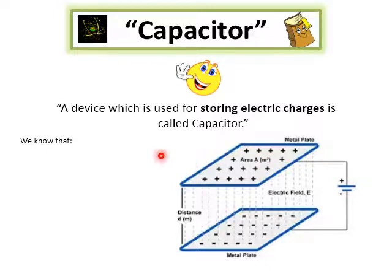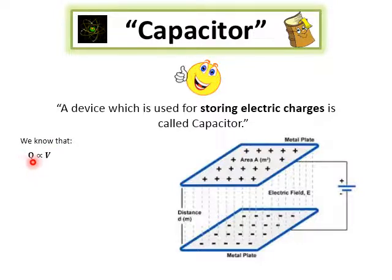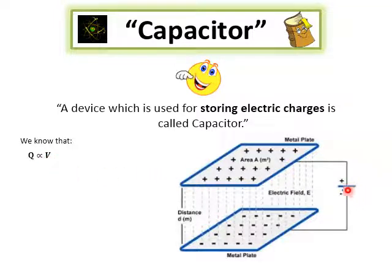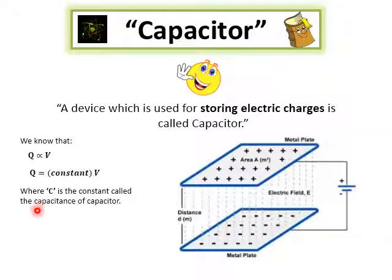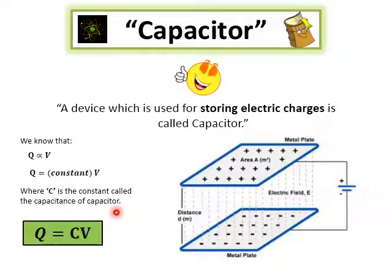We are going to derive the simple relation of the capacitor. We know that the charge on the capacitor is directly proportional to the potential difference or voltage — the greater the voltage on the capacitor's plates, the greater the charge stored. Therefore, Q is equal to a constant times V, where C is the constant called the capacitance of the capacitor. So the formula is Q = CV.